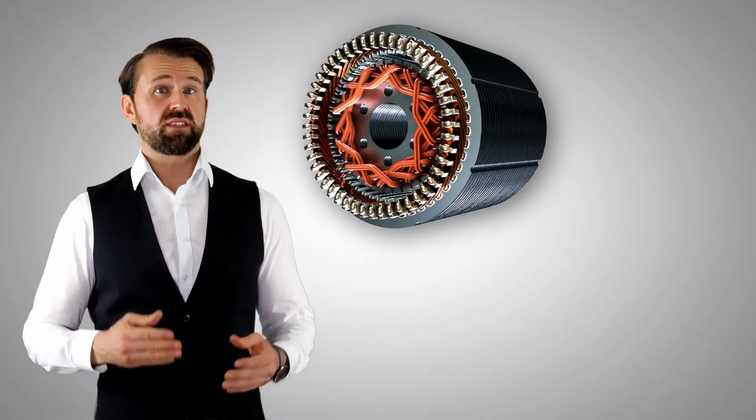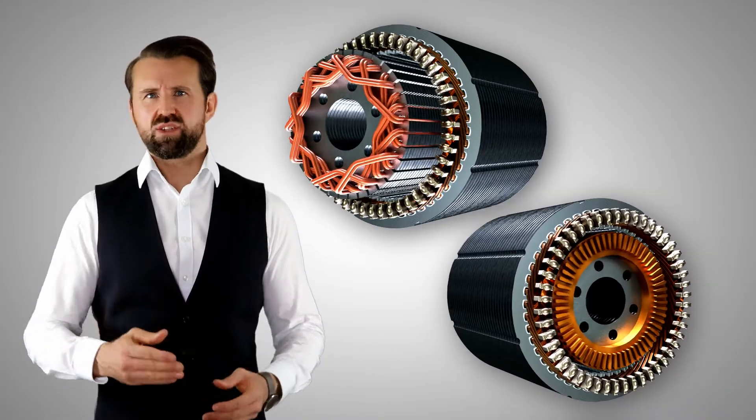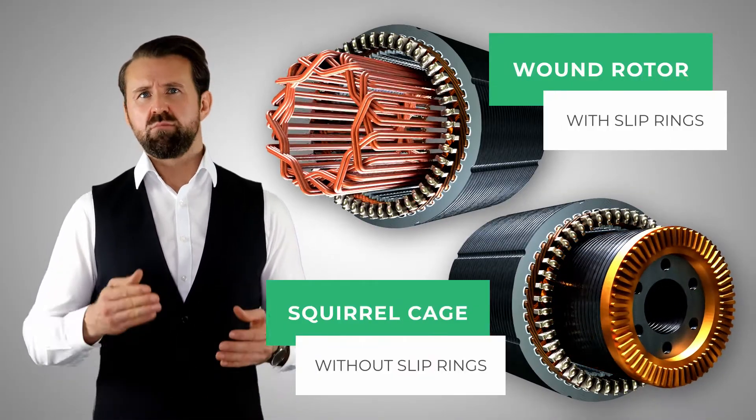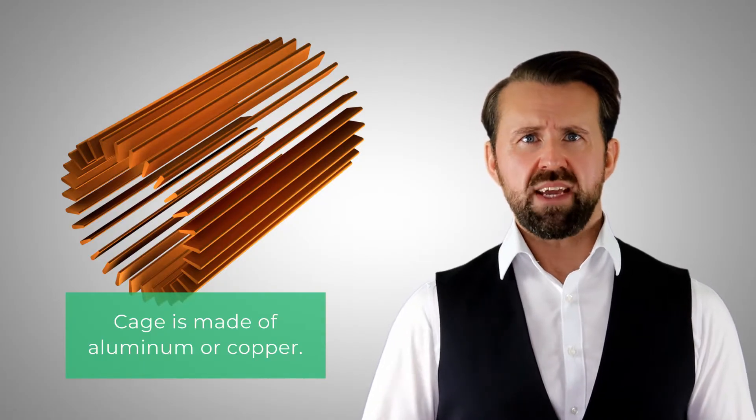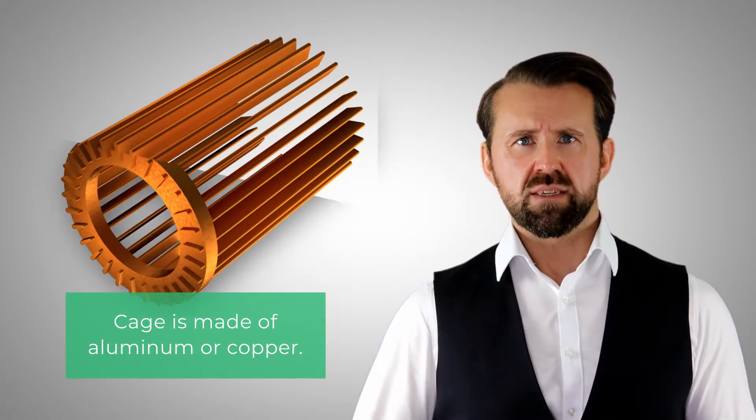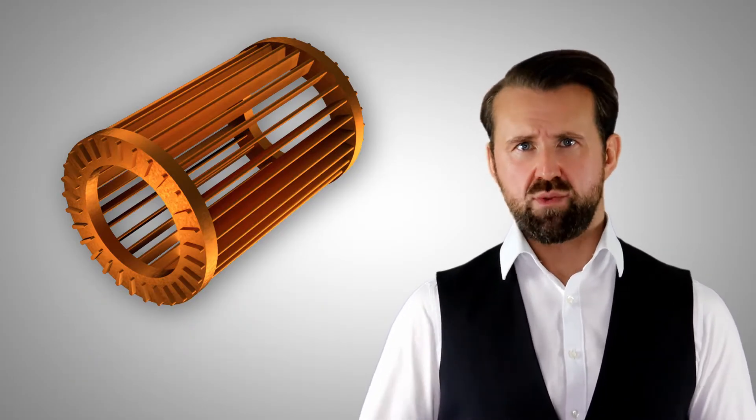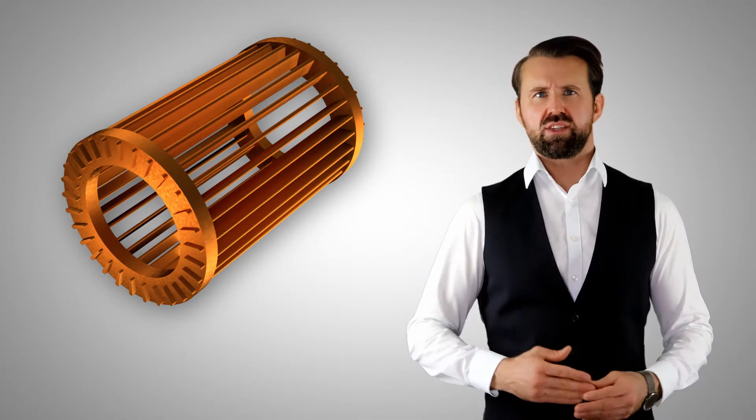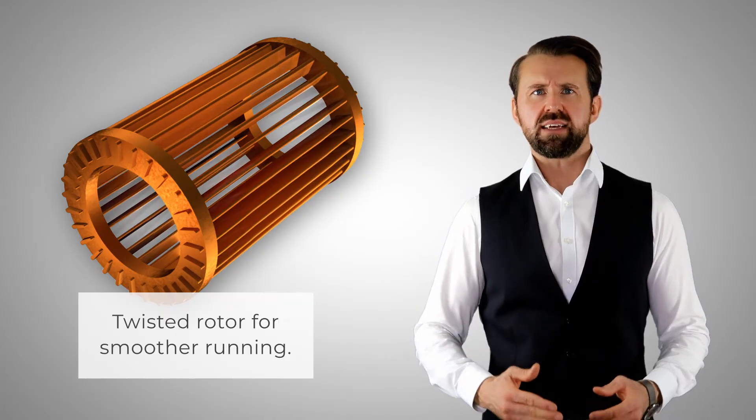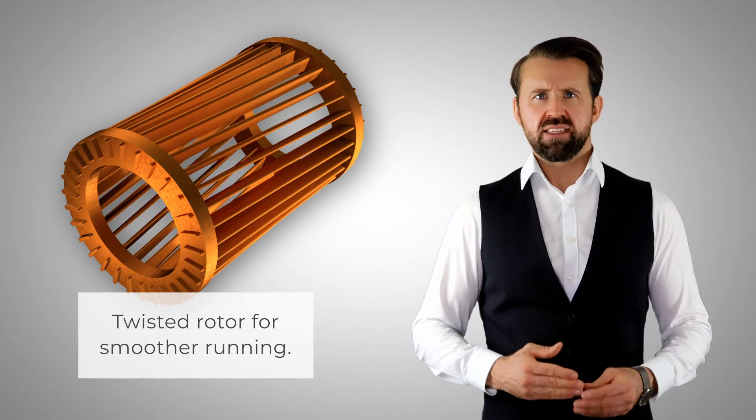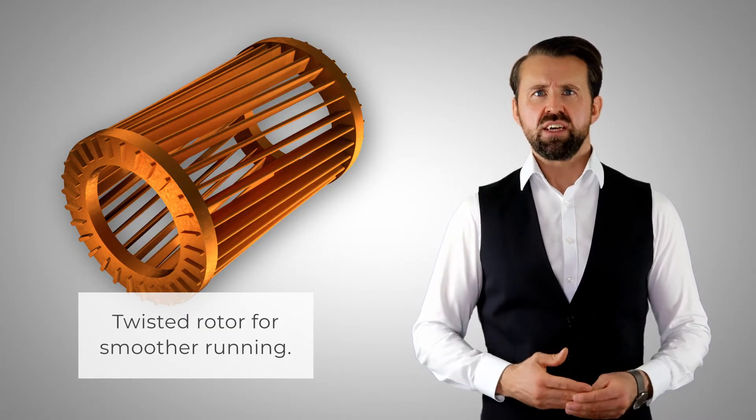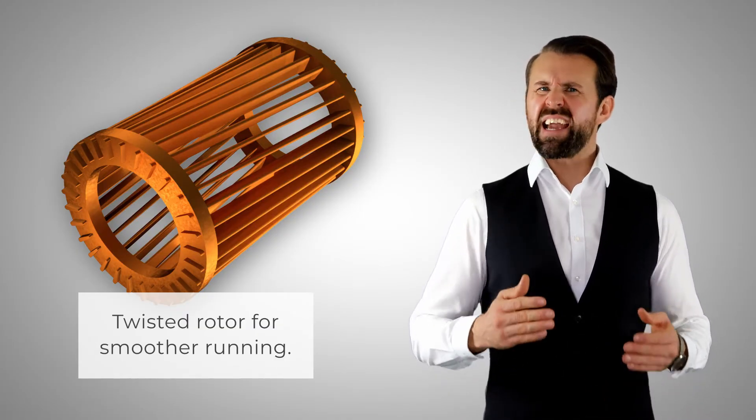Induction motors can be divided into two different types: one with slip ring rotor and one with squirrel cage rotor, which is used in more than 90% of the applications. The squirrel cage rotor consists of a cage of bars which are made of aluminum or copper. The bars are short-circuited at the upper and lower ends with rings of the same material. To reduce torque oscillations from the rotor, the bars and the plates are usually slightly twisted. This also has the advantage that the rotor runs quieter and smoother.